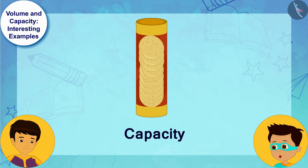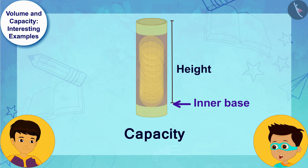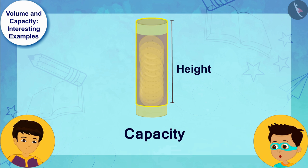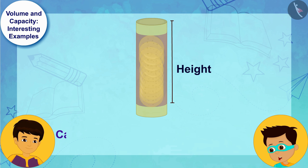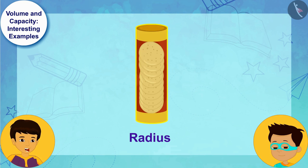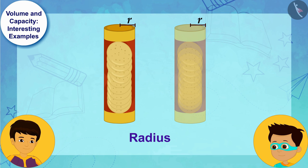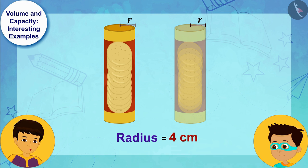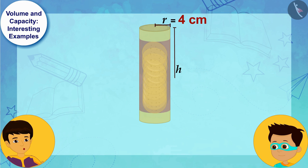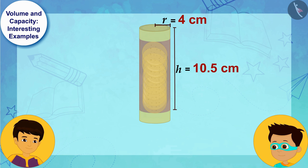To find the capacity of the cylindrical box, we have to measure the height of the box only to the level of the inner base, because we can fill any substance only up to that level. The radius of the base is the same — 4 centimeters — but its height up to the inner base is 10.5 centimeters.